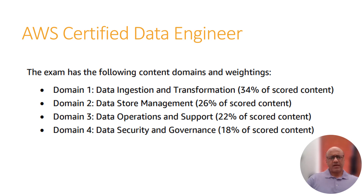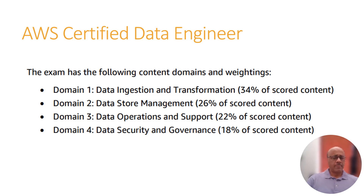Here's a breakdown of what the AWS Certified Data Engineer exam entails in terms of content domains and weightings. There are four domains: Domain 1 — Data Ingestion and Transformation covers about 34% of the exam content. Domain 2 — Data Store Management is about 26%. Domain 3 — Data Operations and Support is 22%. And Domain 4 — Data Security and Governance makes up 18% of the exam content.